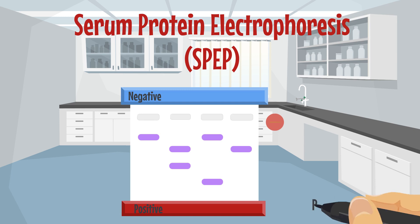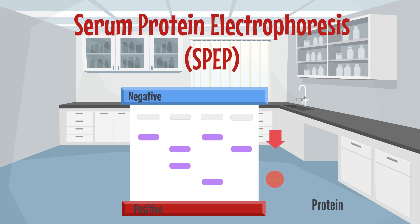Proteins move from the negative terminal to the positive terminal. Different proteins move at different speeds through the gel medium. Staining the proteins with a colored dye leaves marks along the gel medium as different protein molecules in the solution separate out. Any abnormal band of protein not present in the control plasma would be a periprotein. Hence, serum protein electrophoresis answers the question: is there a periprotein?